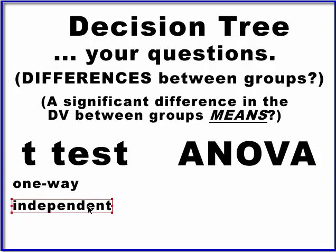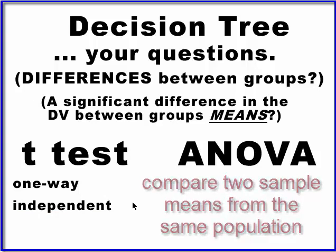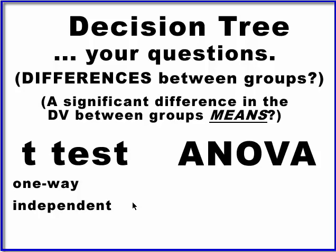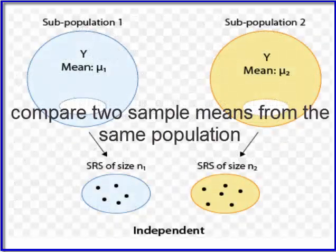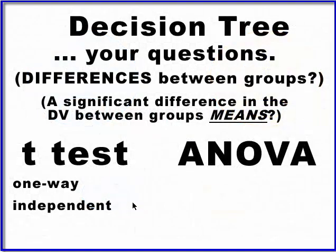The independent t-test is your most used. That means you have two separate groups and you want to compare a DV between them. For example, Mrs. Johnson wants to see if boys scored higher or lower than girls on tests. The DV would be the test scores and the independent variable would be gender — male versus female. This is also called a two-way or two-sample t-test.